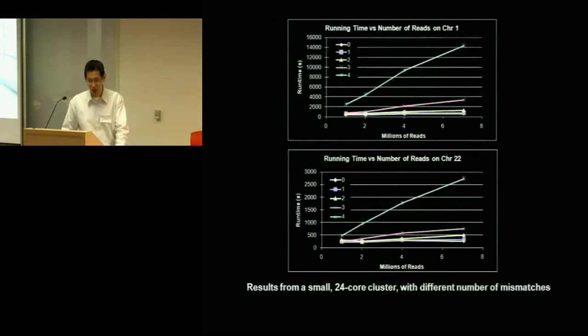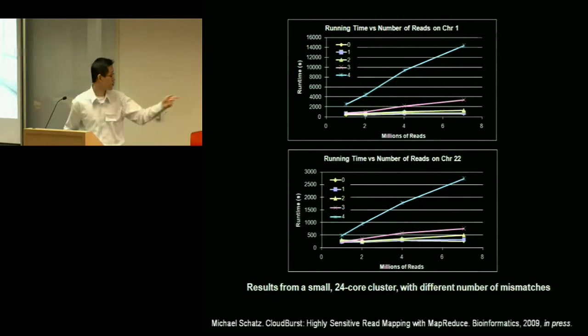So here's some performance evaluation. On the top, you have a running time for human chromosome one and on the bottom, human chromosome 22. So this was run on a relatively small cluster, a 24-core in-house cluster. The different lines represent how many mismatches you allow. So the more mismatches you allow, the looser your matching scheme and therefore the longer it takes to compute the possible alignment. So the nice thing that we see here is that we get linear speedup as the number of reads goes up, which is nice. This is exactly the result that we're expecting and it's a nicely, it's a nice result. And so this was just recently published and it's coming out to press in bioinformatics journal.